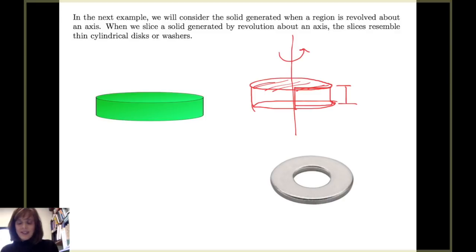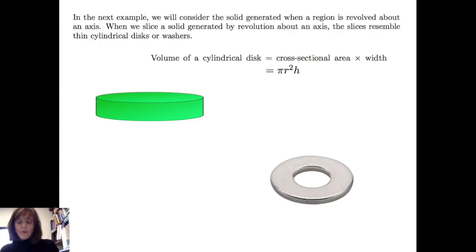Therefore, if I want to find the volume of this thin cylinder, I know that I need the area of the base times the thickness, or in this case, the height. The area of the base is simply a circle, where the radius of the circle comes from the length of this outer edge to the axis of revolution. I square it, multiply by π to get the area of the circle, and then I multiply by the thickness. Therefore, the volume of the cylindrical disk will be πr²h.